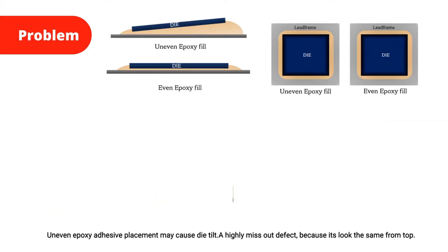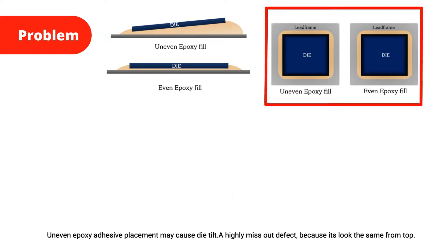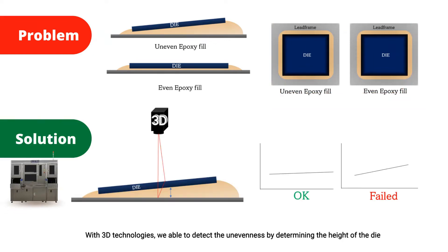Uneven epoxy adhesive placement may cause die tilt — a highly missed defect because it looks the same from the top. With 3D technologies, we are able to detect the unevenness by determining the height of the die.